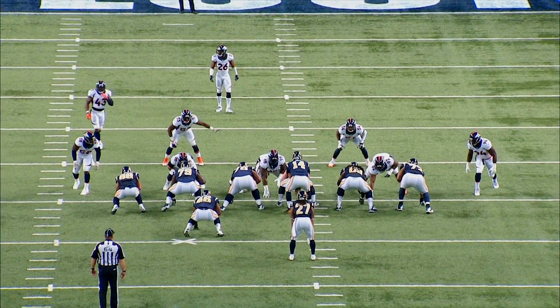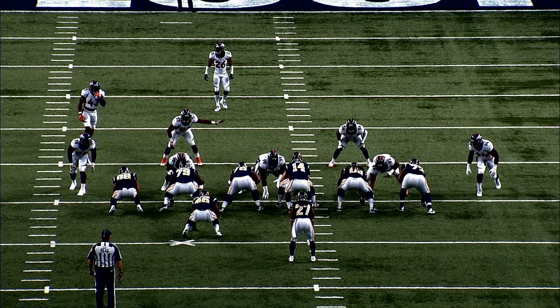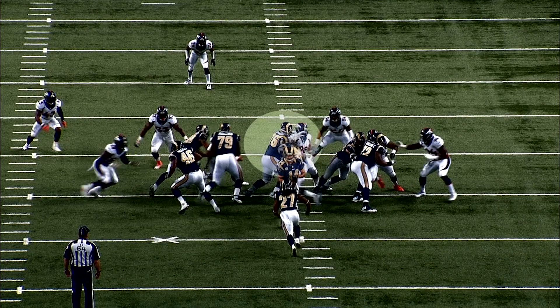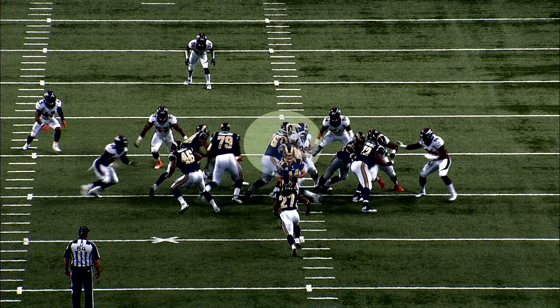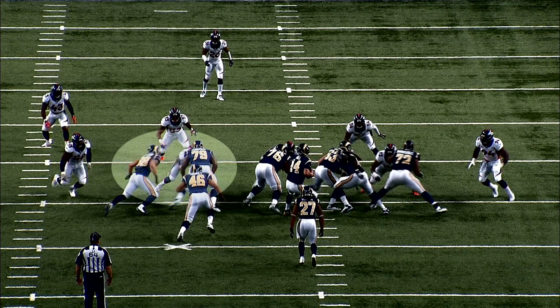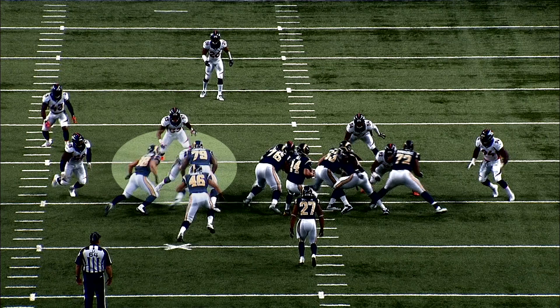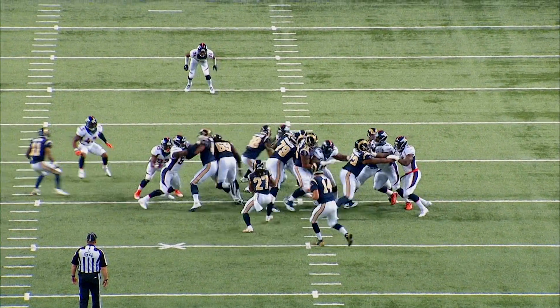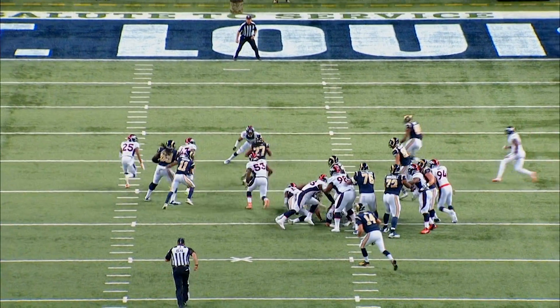Each defender has a gap responsibility. That's how they try to build a wall to stop your run game. Here's the first initial down block right there by the left guard on the nose. And here's your double team where you're going to have the tight end. You got Lance and Greg, double teaming that defensive end back there to that wheel linebacker. That's a great job by those guys.